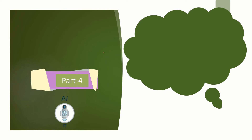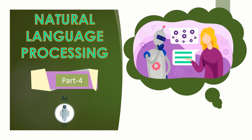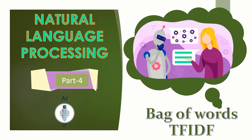In the previous session, we learned how to normalize the text to a lower level. Today, let us understand the two algorithms that are used in the modeling stage of AI project cycle: Bag of Words and TF-IDF.